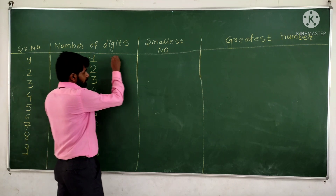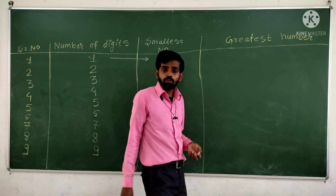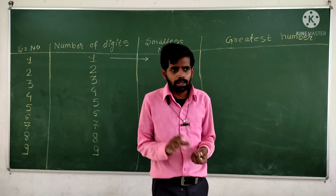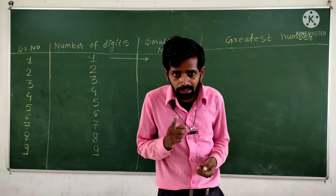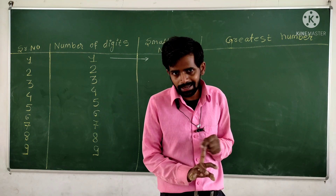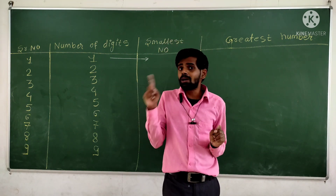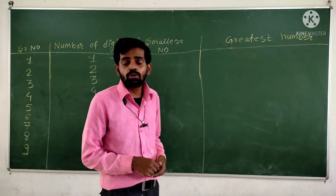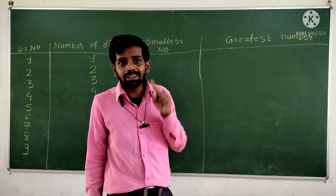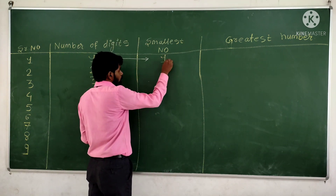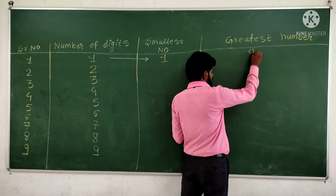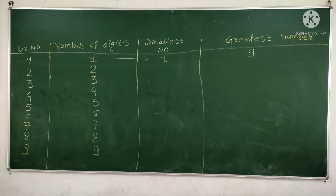There are two concepts: whole numbers and natural numbers. The smallest natural number is one, and the smallest counting number is one. But the smallest whole number is zero. Since we are talking about counting numbers here, the smallest one digit number is one. And the greatest one digit number is nine, because ten is a two digit number and the number just before ten is nine.